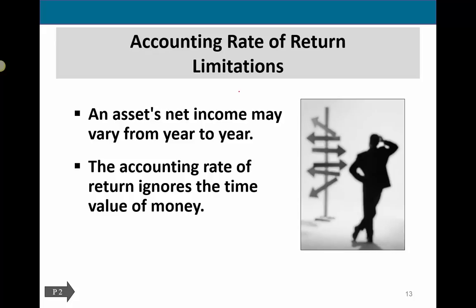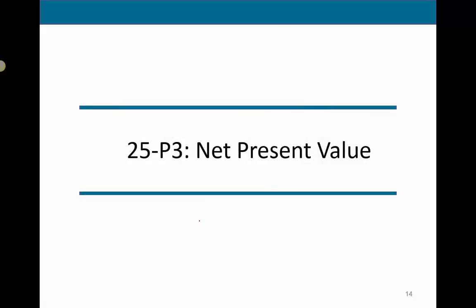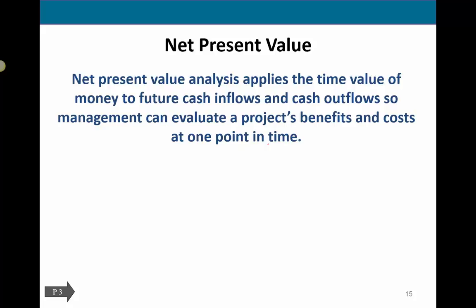The accounting rate of return has limitations: net income may vary from year to year, while our calculation assumes it's constant. More importantly, it also ignores the time value of money. That brings us to net present value, which does incorporate the time value of money into the calculation.